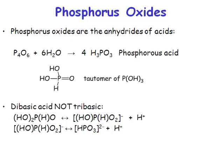We talked quite a bit about the fact that these non-metal oxides are the anhydrides of acids — of mineral acids. So if we take either P4O6 or P4O10 and we add water to them, we hydrolyse them — the process of adding water is just a hydrolysis reaction — then what you get are acids. If you take P4O6 and react it with six equivalents of water, you get four equivalents of something called phosphorous acid. Note that is phosphorous acid — it is not phosphoric acid. Phosphorous acid is the species you get if you hydrolyse P4O6; phosphoric acid is the species you get if you hydrolyse P4O10.